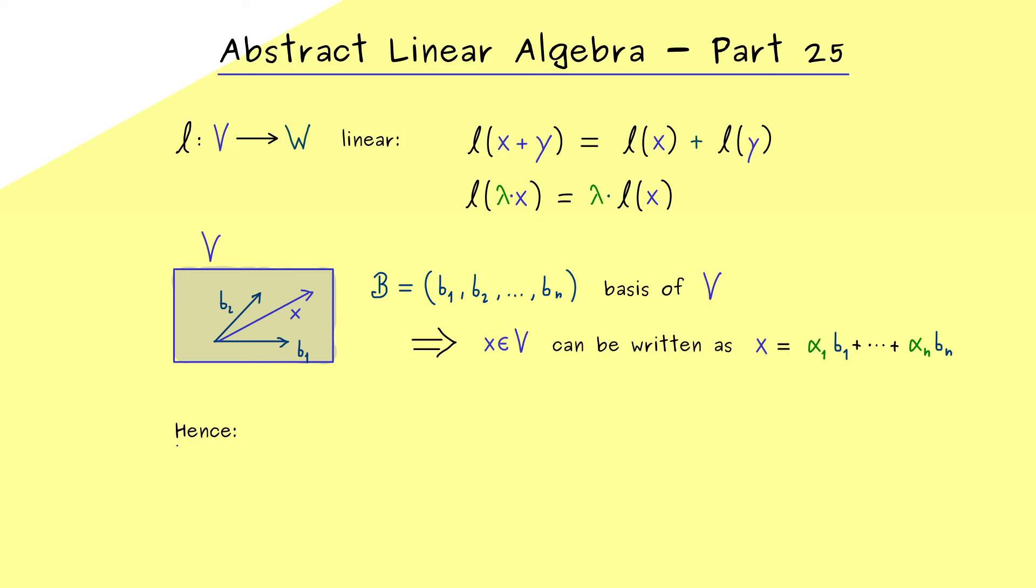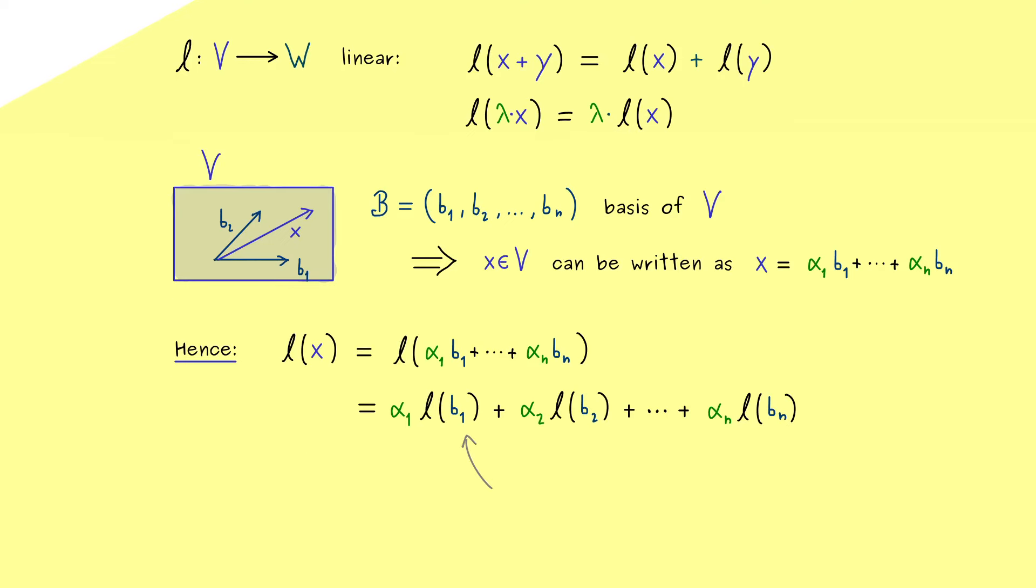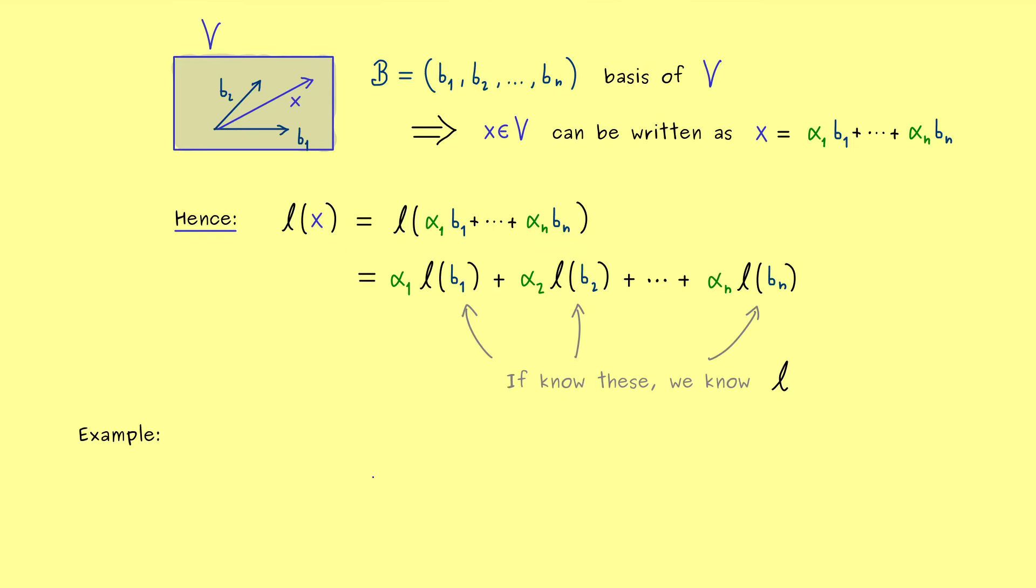And by having this nice linear combination, we can already conclude that we can use the linearity of the map L. Hence L can also be written as a linear combination, and the corresponding vectors in the linear combination are just the images of the basis elements. In fact we see, these are all the information we need to get the information about L of x. So you see, linearity is a very strong property, because it fixes the map already on the basis.